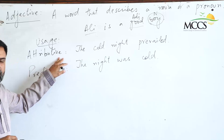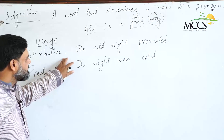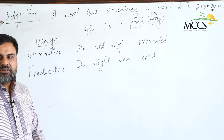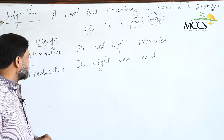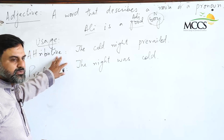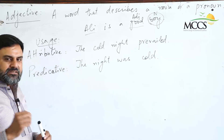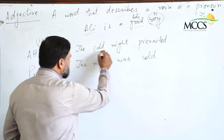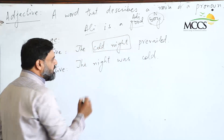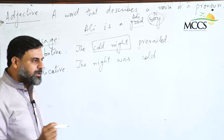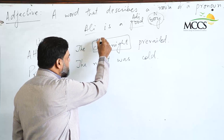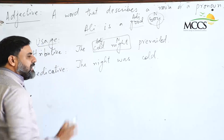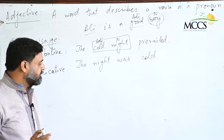Now there are two normal cases of adjectives — two ways we can use adjectives in a sentence. The first is the attributive use of adjectives, where the adjective and noun come in a pair; that means the adjective describing a noun comes together with it. That is the attributive use of adjectives.